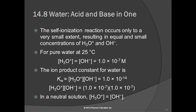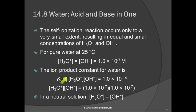At room temperature — 25 degrees — with pure water, the hydronium ion concentration equals the hydroxide ion concentration. It has to be, because for every hydroxide you form, you also form a hydronium ion. And it equals 1 times 10 to the minus 7 moles per liter — a very small concentration: 0.0000001 molar. The ion product constant, which is the equilibrium constant for this ionization reaction, is given the symbol Kw. Kw equals [H3O+] times [OH-], and that equals 1 times 10 to the minus 14.